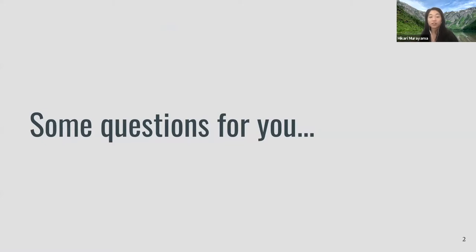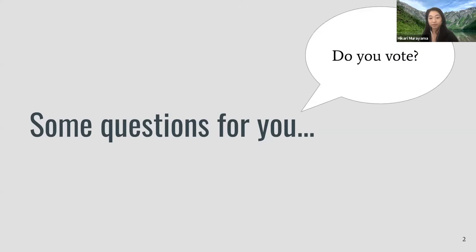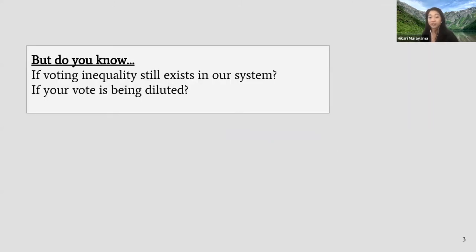Even though we all think voting is important, under the hood we don't necessarily know what happens to our vote once it goes into the system. Do you know if voting inequality still exists in your system? This could be happening at the local or national level, whether you're voting for a school board official or for president. Or do you know if your vote is actually being diluted? Let's break it down.